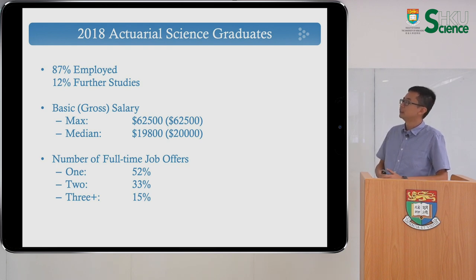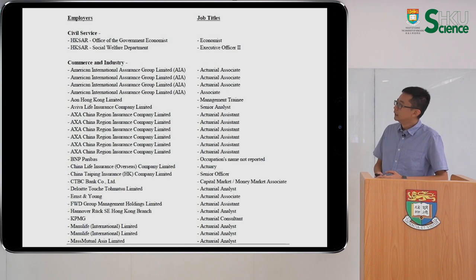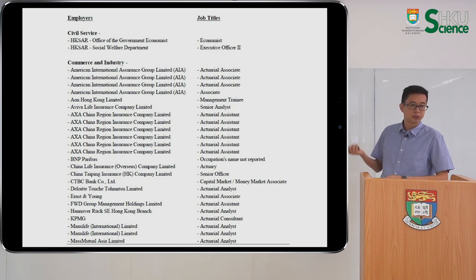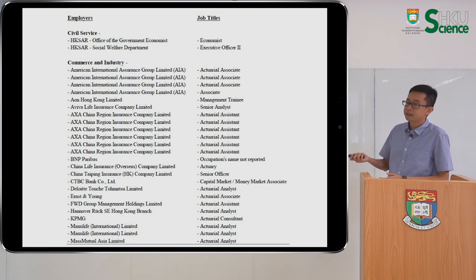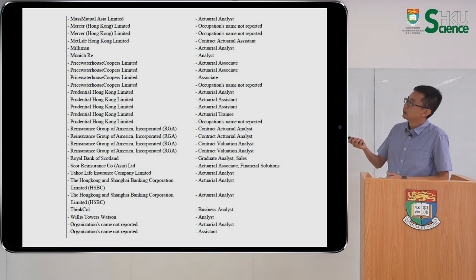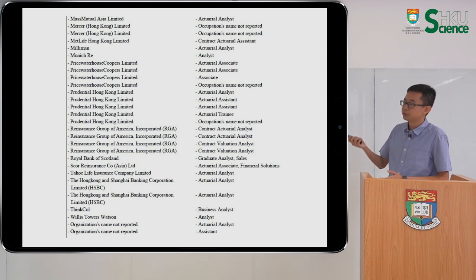The job market in the past few years has been pretty solid, and we foresee it will continue to be so in the future. Here is the list of employers and job titles of our graduates from last year. You can see companies include insurance companies, banks, consulting firms, government, and so on. Job titles are actuarial associate, actuarial assistant, and so on — all actuarial related.